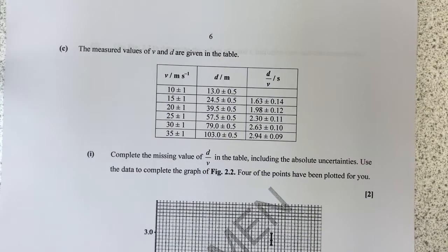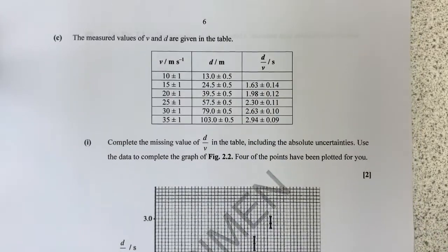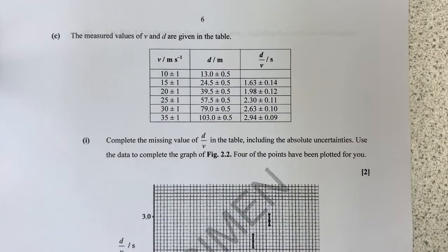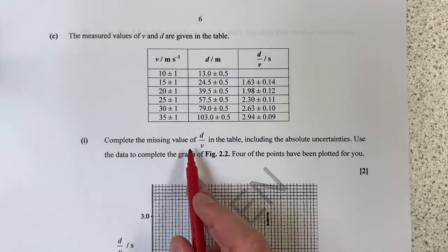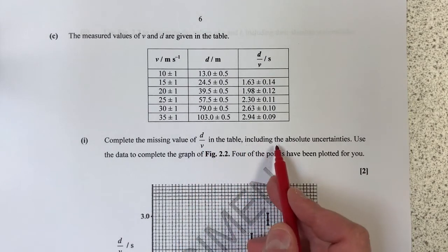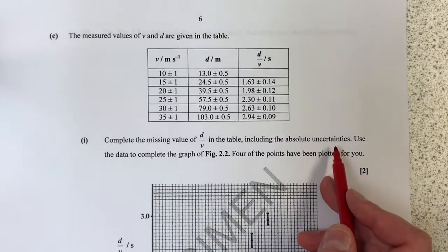Next page, a little bit of data, a little bit of graph drawing. The measured values of V and D are given in the table. Complete the missing value for V over D in the table, including absolute uncertainties.